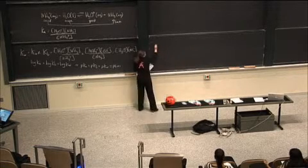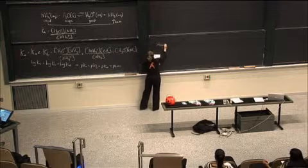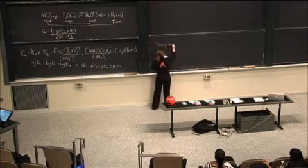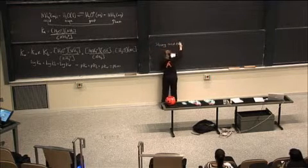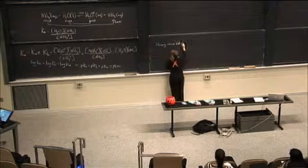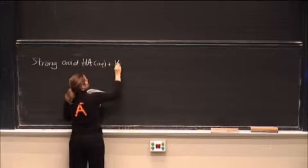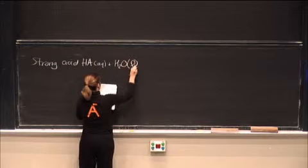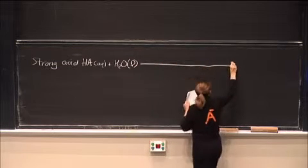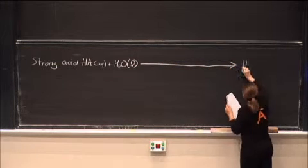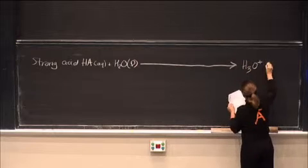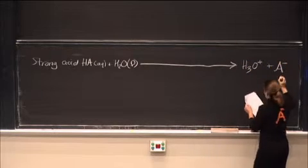So if we have a strong acid, HA, in water, it's going to go pretty much completely over to hydronium ion and the conjugate.